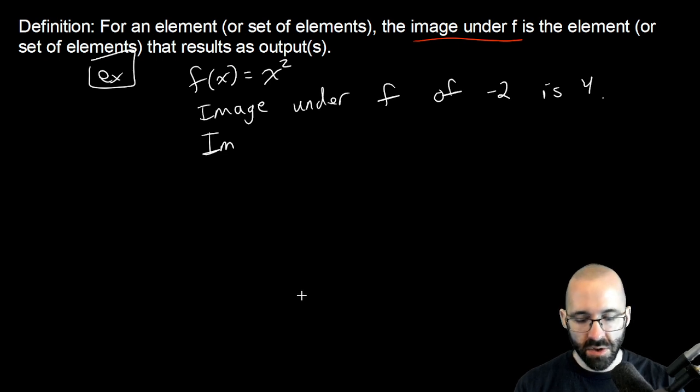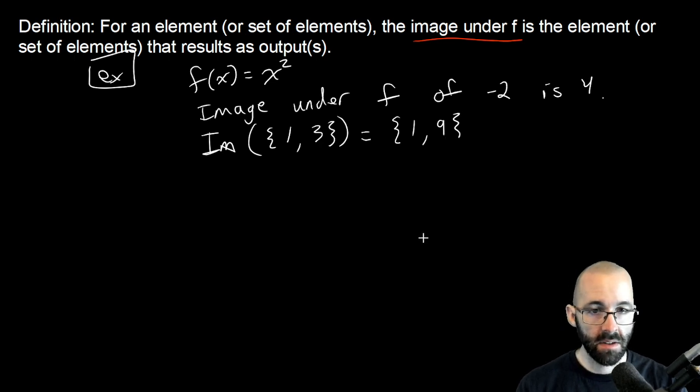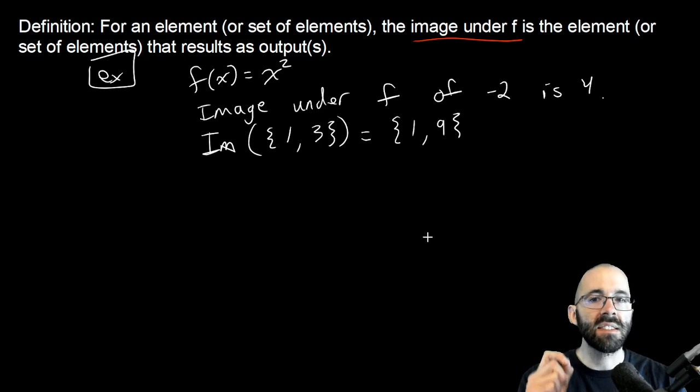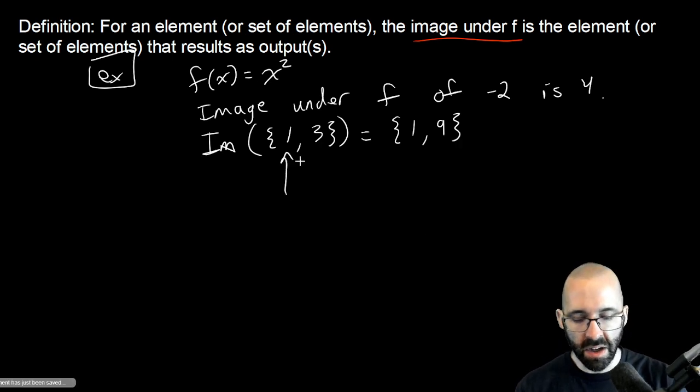Here's what I mean by that: the image of the set {1, 3} for this function is the set {1, 9}. The image under f is the set of elements that result - you put in 1 you get out 1, you put in 3 you get out 9.